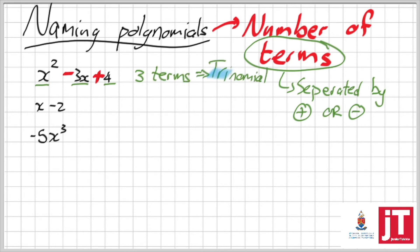Therefore, it is a three term. There are three terms. And I call it like a tricycle, a trinomial.